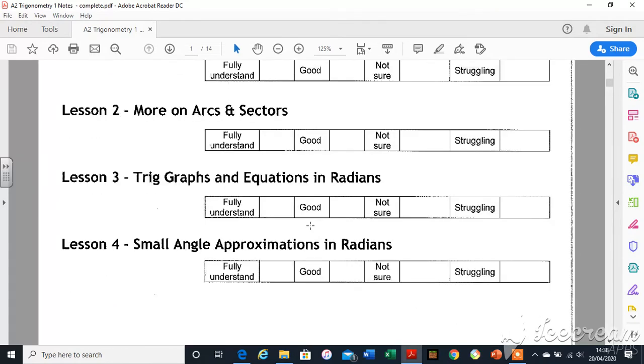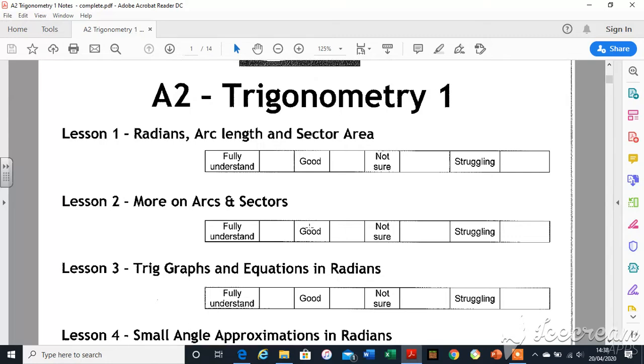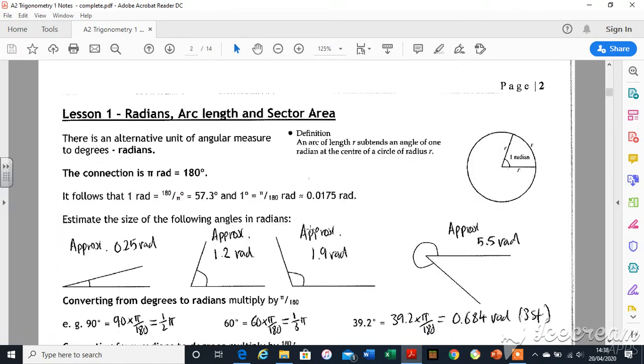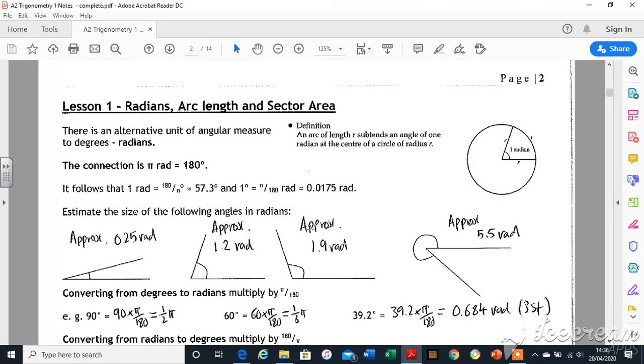So this pack, it's the first lesson of the second year trig stuff and it looks at, first of all, something called radians. Now, on your calculator, you've always had radians there, but it's just a different way of recording angles, that's all. Just a different way for measuring angles.